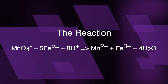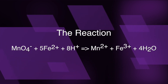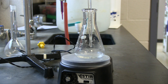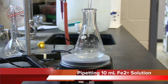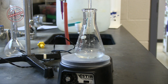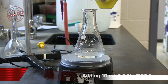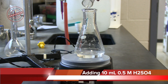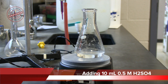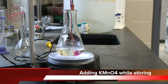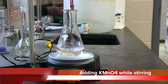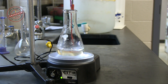This is the reaction on which the lab is based. After pipetting 10 ml of the ferrous ion solution into an Erlenmeyer flask, add about 10 ml of 0.5 molar sulfuric acid. Now add potassium permanganate from the burette. Use a stir station to constantly mix the solution.